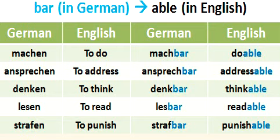The next example: 'to address' is 'ansprechen' in German, and 'addressable' in English is equivalent to 'ansprechbar' in German. You can see that the '-en' of 'ansprechen' is removed and '-bar' is added instead, to make 'ansprechbar', which means 'addressable'. Similarly, 'to think' is 'denken', and 'thinkable' is 'denkbar' — again, the '-en' of 'denken' is removed and replaced with '-bar'.